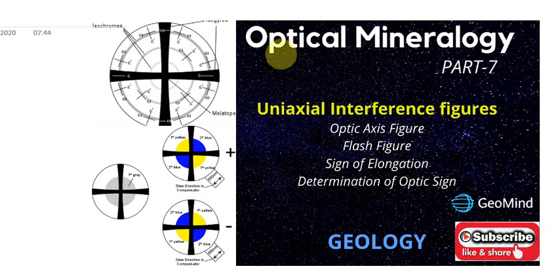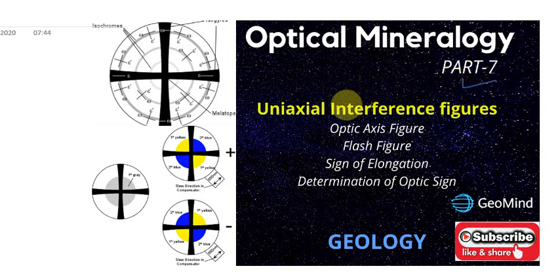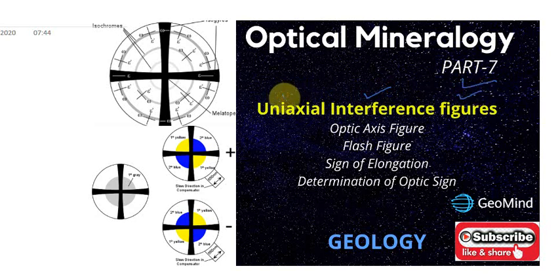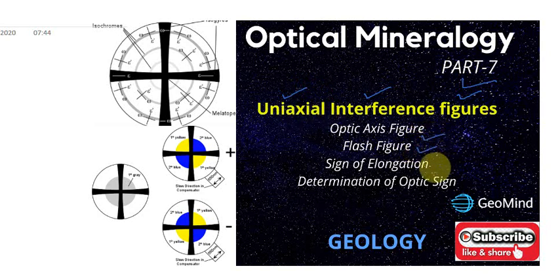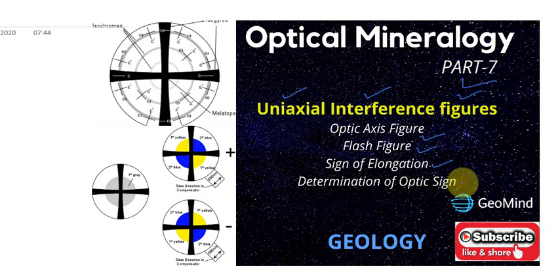Hey guys, welcome to GeoMind. In today's video we will start Part 7 of optical mineralogy. In this video we will discuss the interference figures of uniaxial minerals. We will cover the optic axis figure, flash figure, sign of elongation, and the important part — determination of optic sign.